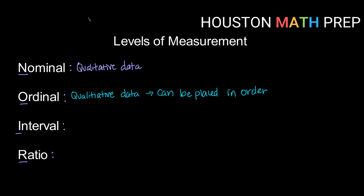An example of nominal data might be color. So let's say we're talking about jerseys — the color of the jersey would be nominal. We can't put it in order; it is strictly a category. An ordinal piece of data might be the size of the jersey — small, medium, large, extra small, extra large, that kind of idea. But now we're able to put those categories in an order that is meaningful.